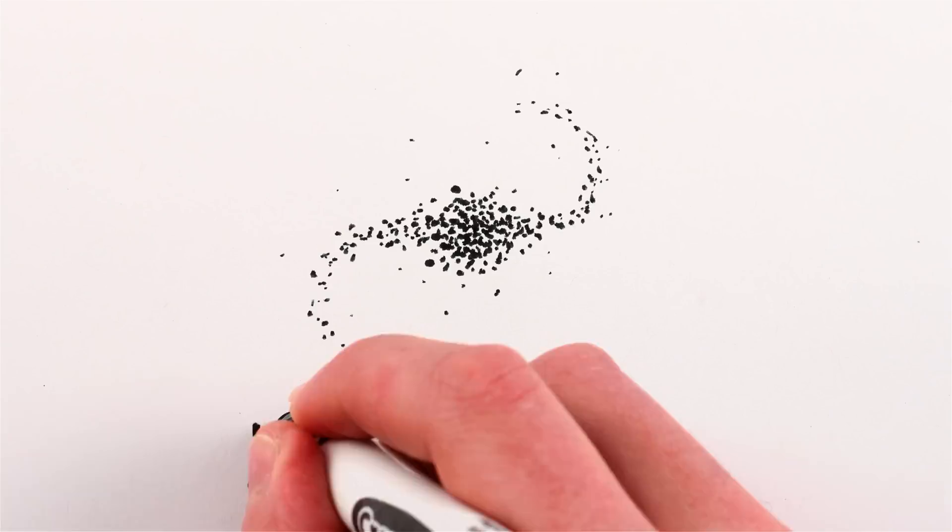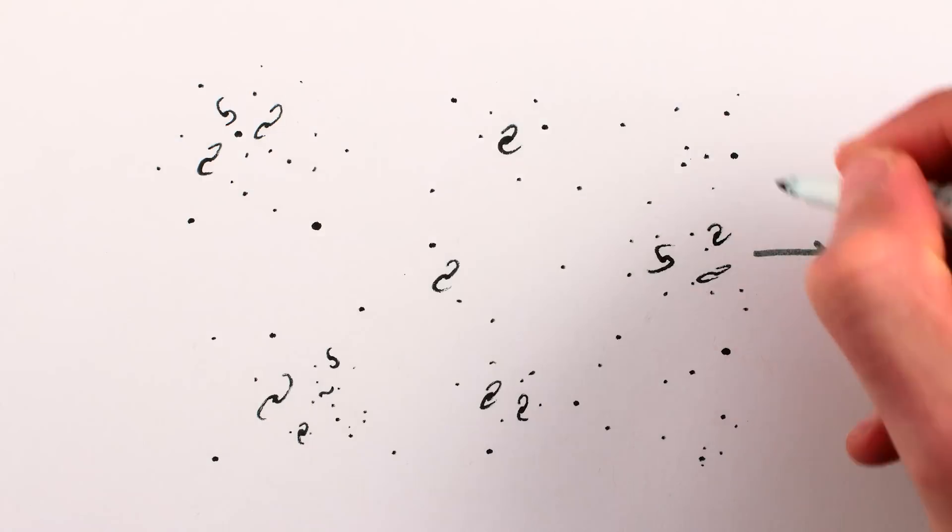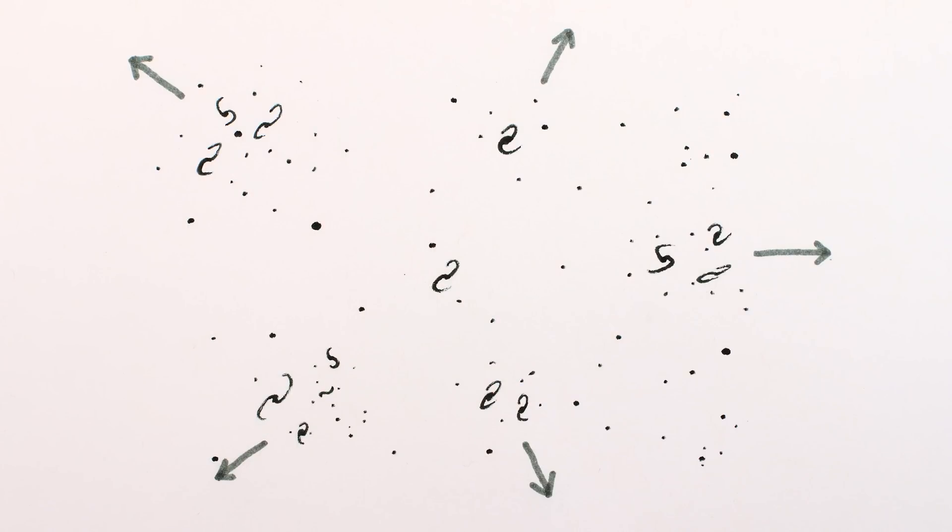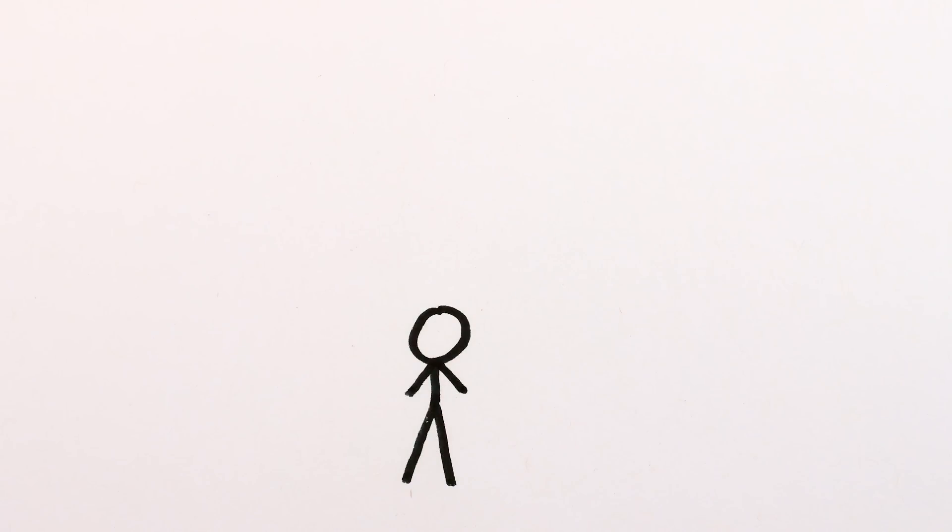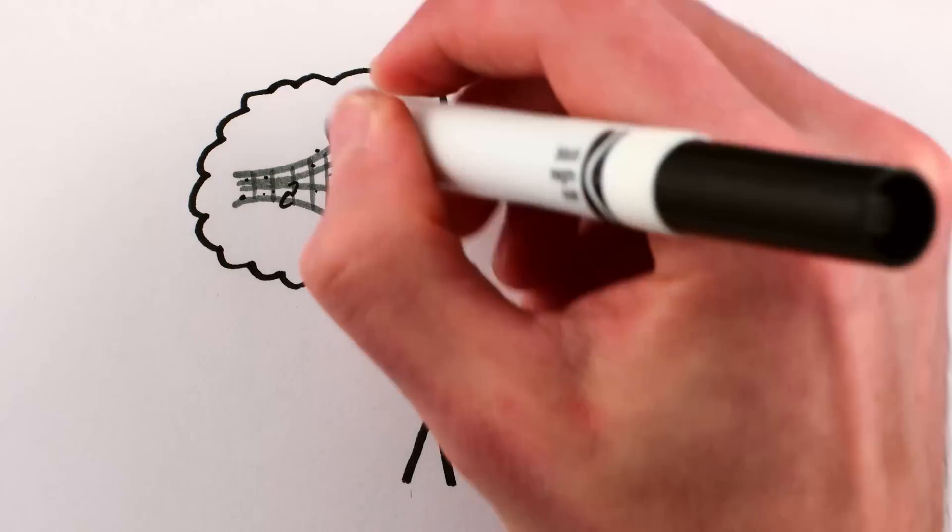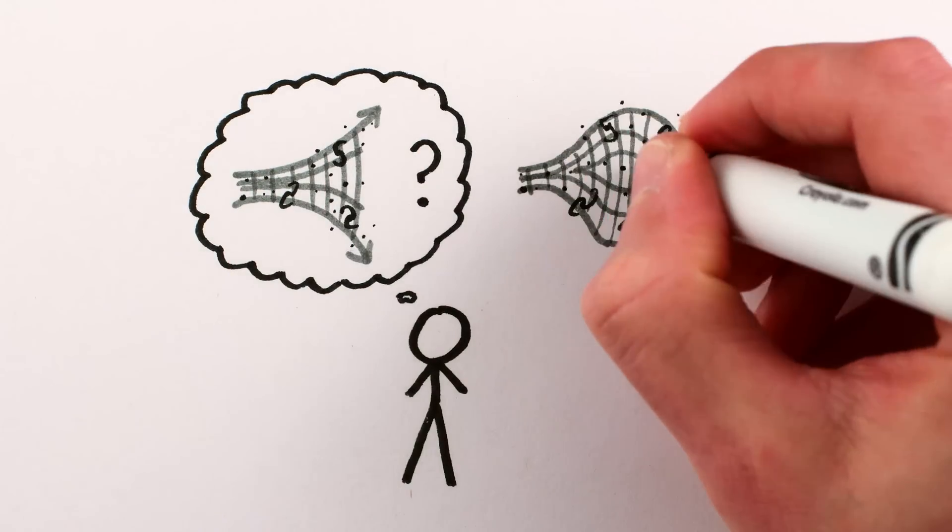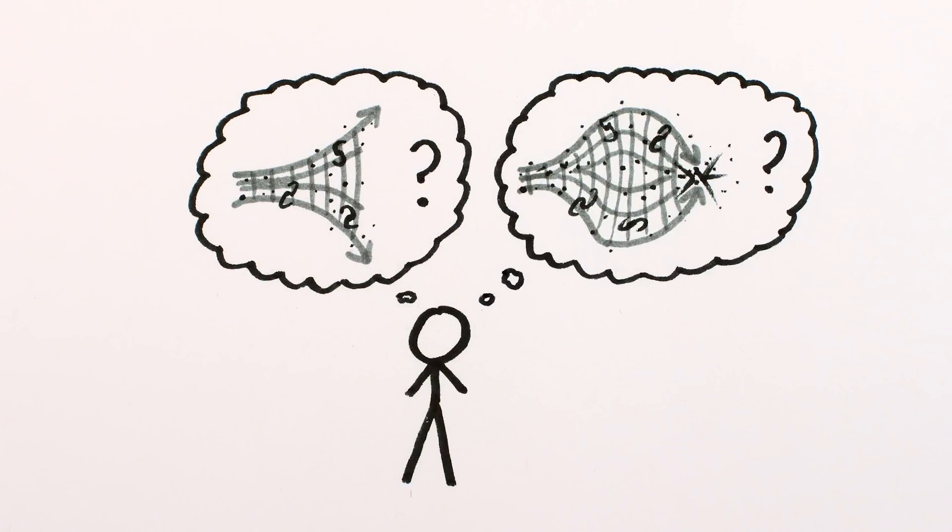The universe is expanding. If you zoom out far enough, you'll find that everywhere in the universe is moving away from everywhere else. But once you know the universe is expanding, you might wonder if it's going to keep expanding somehow, or eventually stop and crunch in on itself because of the attractive force of gravity.